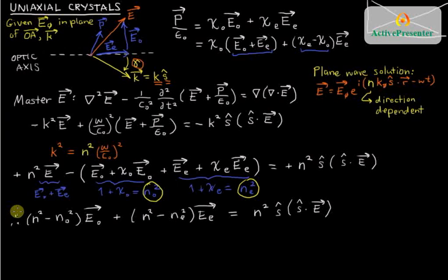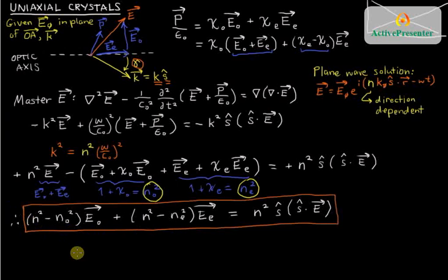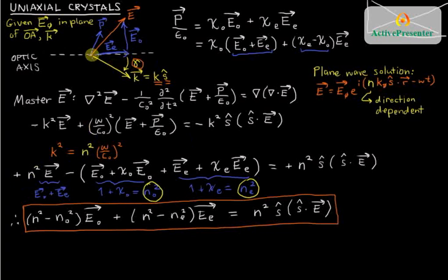We now have a final expression that is a function of just two unknowns: N, which is related to the magnitude of the wave vector, and s-hat, which is related to the direction of the wave vector.